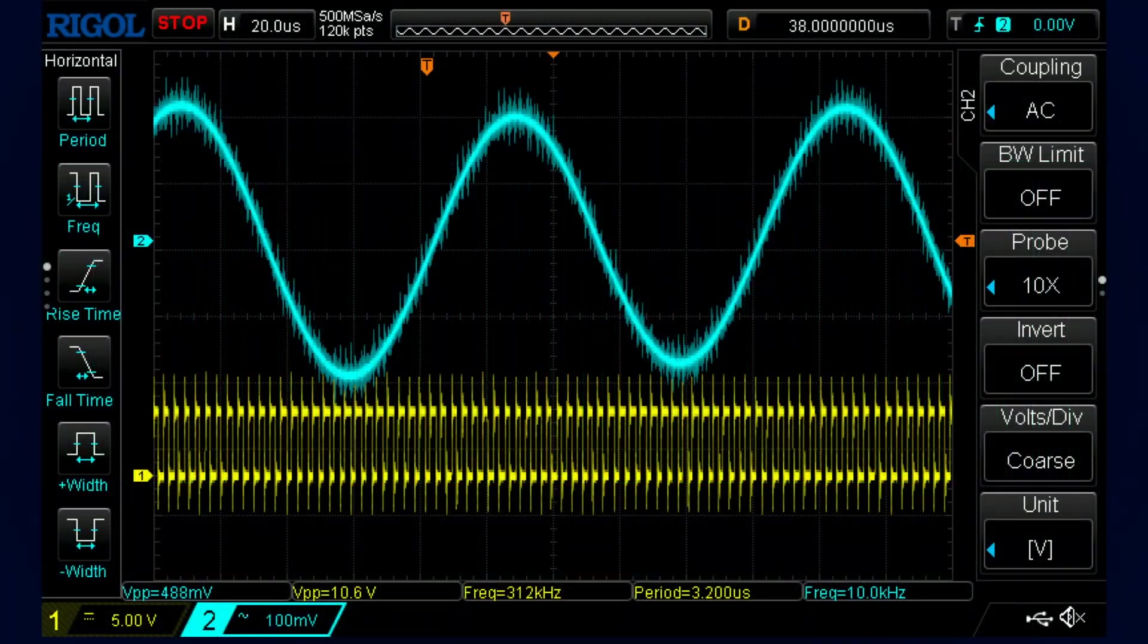I have captured the output from the amplifier when it is being fed with a 10kHz sine wave. To simulate the speaker acting as a low pass filter I have added a simple LC filter to the output and captured the filtered signal. As you can see we are able to recover the 10kHz input sine wave from the amplifier's PWM signal.